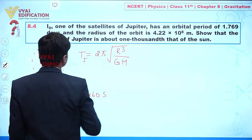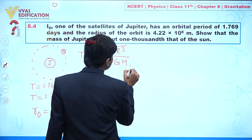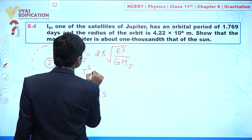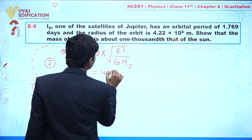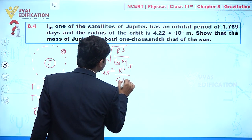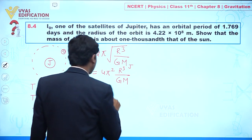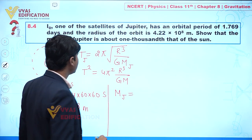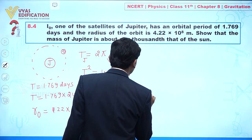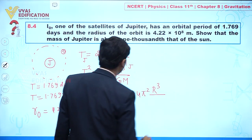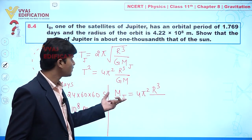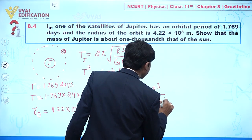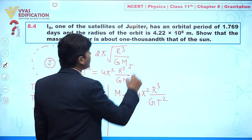From the time period formula, if we square both sides, we get T² = 4π²r³/GM. So from here we can write the mass of Jupiter as M_J = 4π²r³/GT².